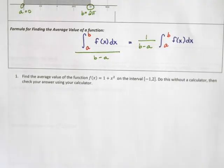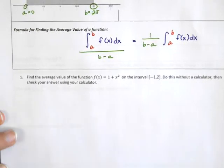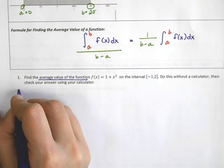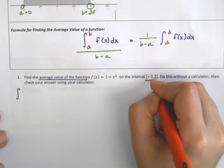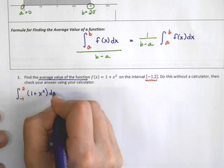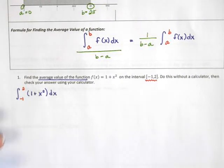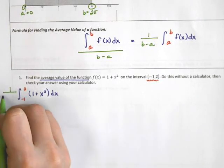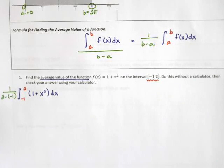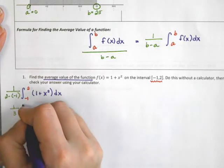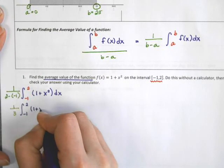Number 1 says: find the average value of this function over the interval between negative 1 and 2, and we're going to do this two ways. Way number 1 is finding the average value without a calculator. Our formula says you're going to integrate over your interval, so from negative 1 to 2, of your function 1 plus x squared dx. To make it an average, we do 1 over b minus a, which would be 2 minus negative 1, giving us 1 third times the integral from negative 1 to 2 of 1 plus x squared dx.